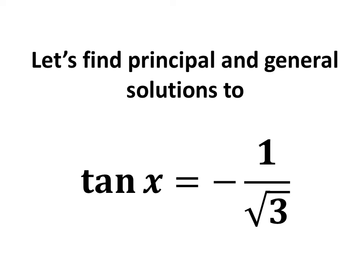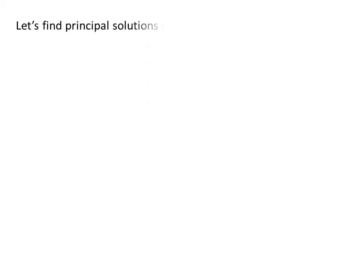In this video, we will learn to find the principal and general solutions to the equation tangent of x is equal to minus 1 upon square root of 3. Let us first find the principal solutions. We know the solutions to the trigonometric equation for which x is greater than or equal to 0 and less than 2π are the principal solutions.